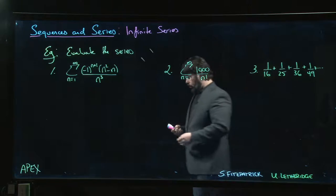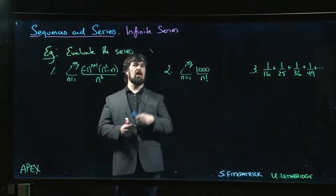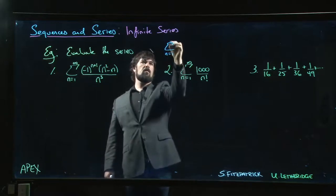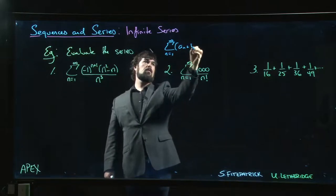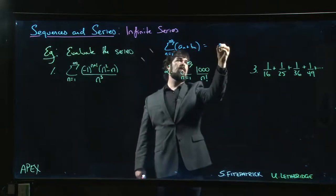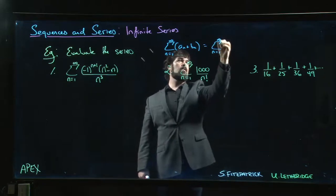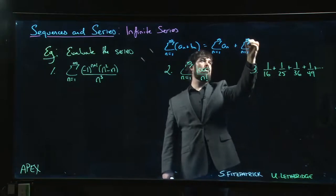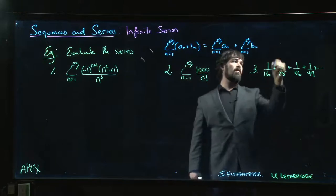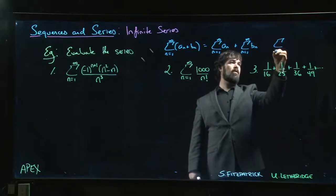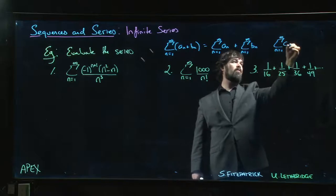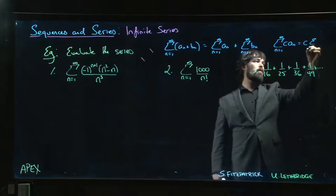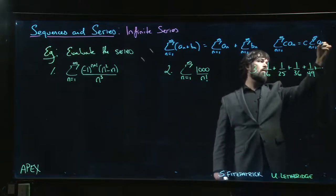A couple of the properties that we are going to rely on here are things like: if you have the series of a sum, you can write that as a sum of series. So sum of the a_n's plus sum of the b_n's. And if you have a common constant multiple, say c times a_n inside the series, you can factor it out.